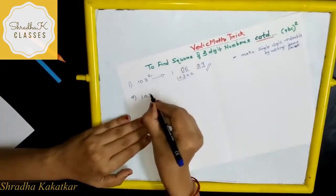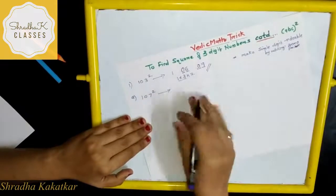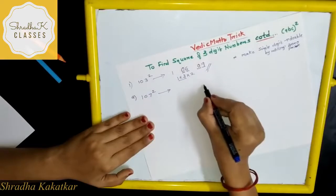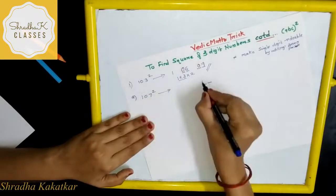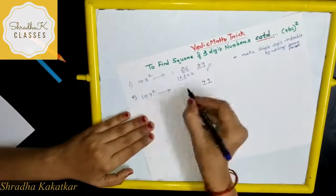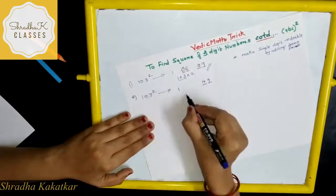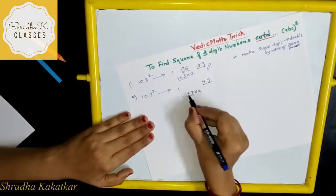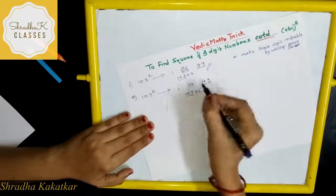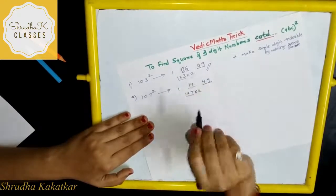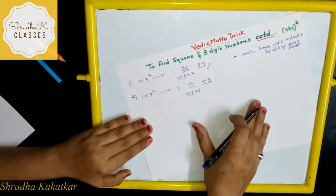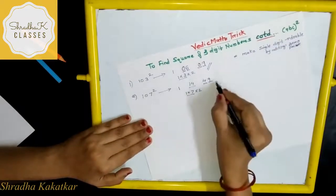Now let's take 107. So what do we do? 7 square is 49, and 1 square is 1. Now 1 into 7 into 2, so 1 into 7 is 7, 7 into 2 is 14. So here we got two digits, we don't have to add zero prior to this digit. So this is the answer.